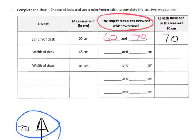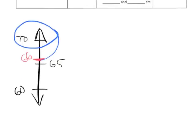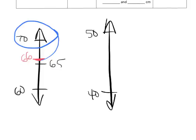Now let's do the width of the desk. The width of the desk is 48, which means it lies between 40 and 50. Just to press the point, I'm going to draw my number line between 40 and 50.